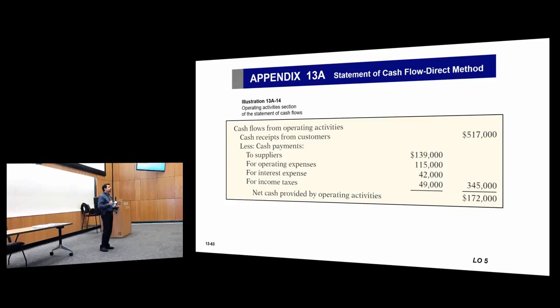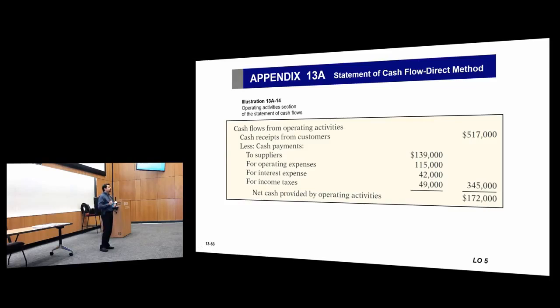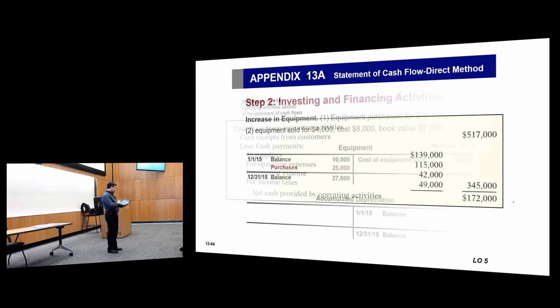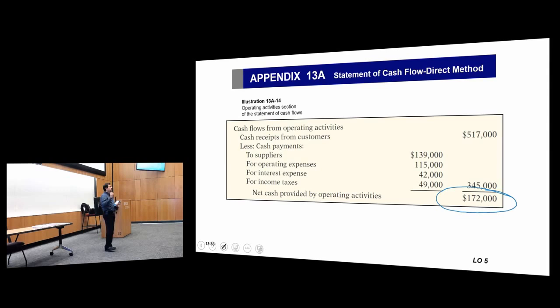This is how it looks under the direct method: you have cash inflows — cash receipts from customers — and then cash outflows — cash payments to suppliers, for interest, for taxes, for operating expenses, etc. This will give you net cash provided by operating activities. This is the same amount as calculated under the indirect method; it has to be the same amount. Any questions?